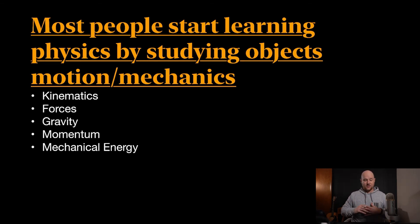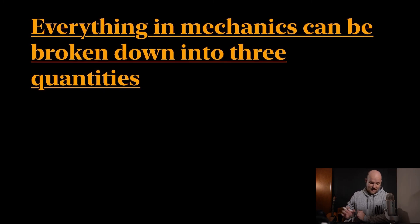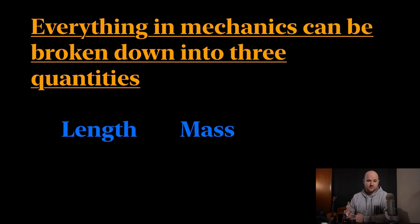But all of these topics and all of these motion and mechanics, all these things, they're really all broken down to just three things, believe it or not, only three things. So everything in mechanics can be broken down into three different quantities. The first one is length: how far, how long, or whatever, any sort of measurement of length is really important when you're studying motion. The other one is mass: how much mass does that object hold? And the last one is time.